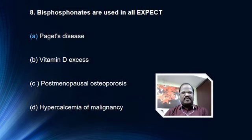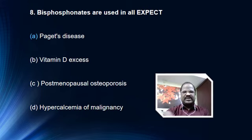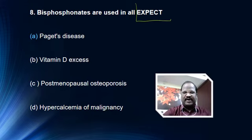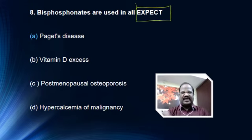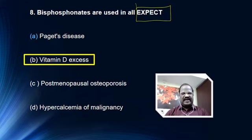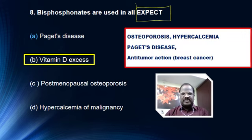Question: bisphosphonates are used in all except. Options are Paget's disease, vitamin D excess, post-menopausal osteoporosis, and hypercalcemia of malignancy. The answer is option B, vitamin D excess. You should know the uses of bisphosphonates: they are wonderful drugs for treatment of osteoporosis, hypercalcemia, and Paget's disease. Currently, for treating osteoporosis, hypercalcemia, and Paget's disease, bisphosphonates are the first-line drug of choice.